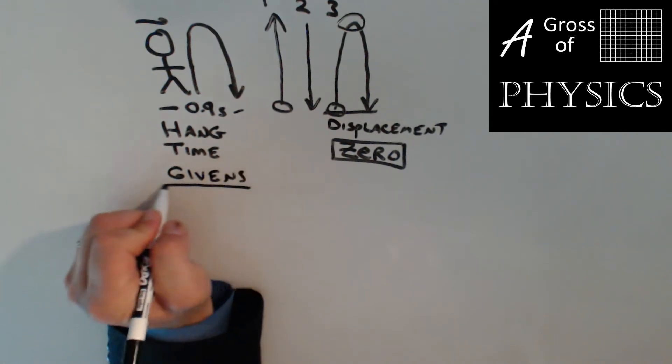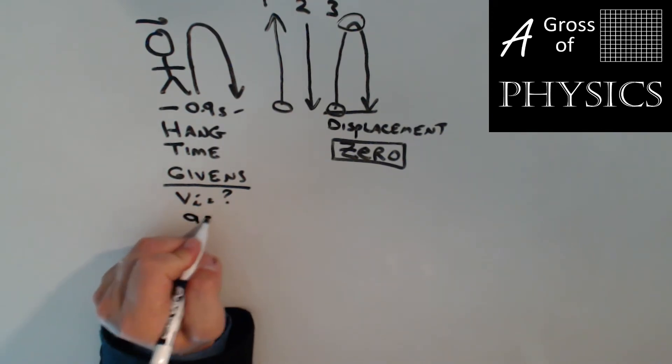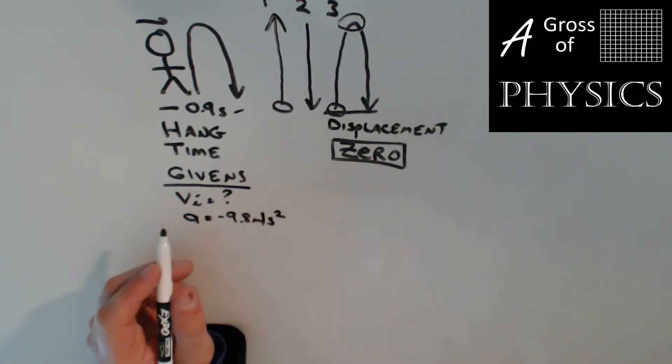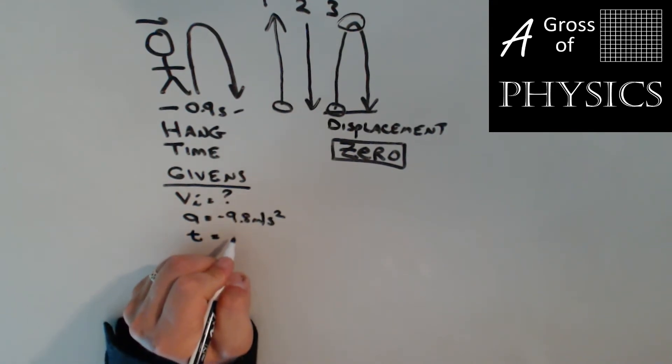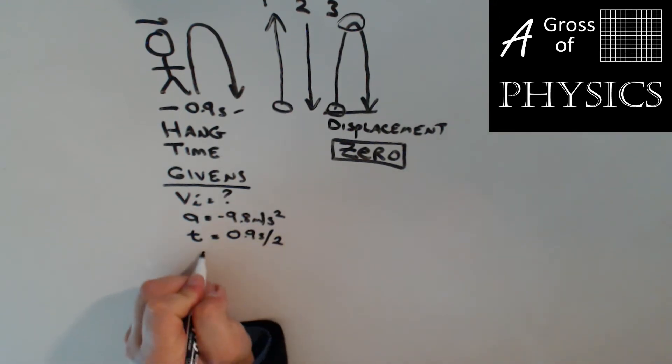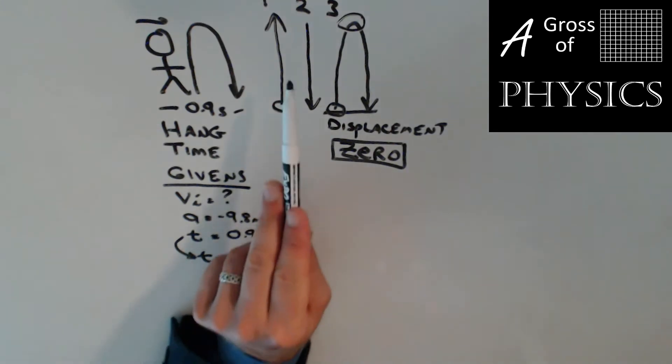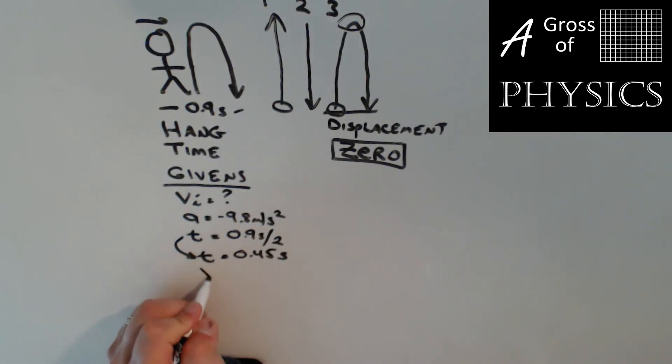So my givens, VI, well that's my unknown, so I'll just put a question mark. We're on the Earth's surface, negative 9.8 meters per second squared for the acceleration. And now, this T is not going to be 0.9, but it's going to be 0.9 seconds divided by 2, which should get us 0.45. So T is 0.45 seconds. So this is the important part of the problem. We need to break the time in half. Now, the other part is that if we look at just the upward part of the motion, the final velocity for this part of the problem is actually going to be 0.